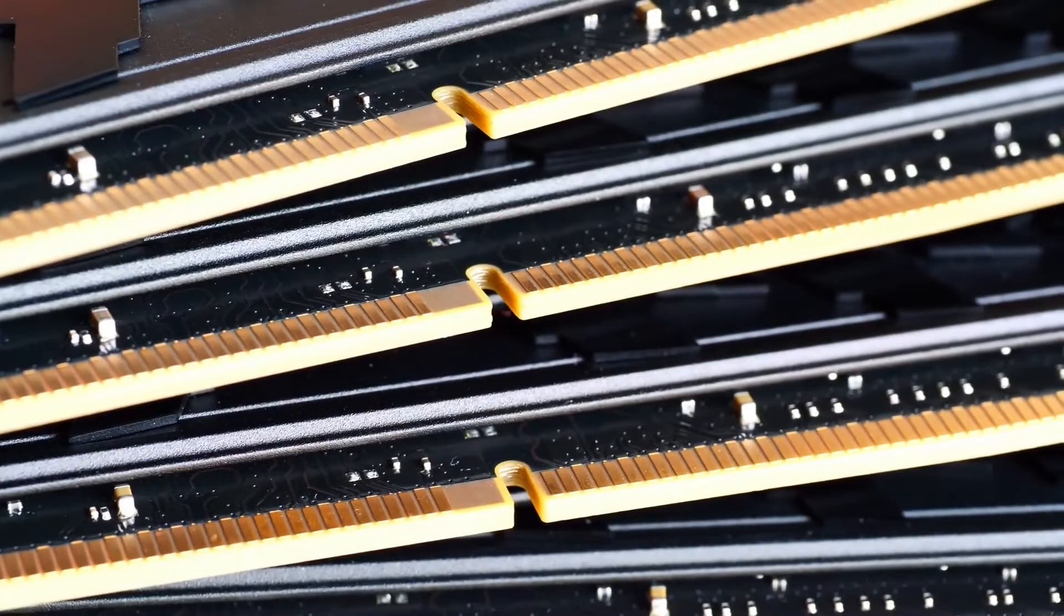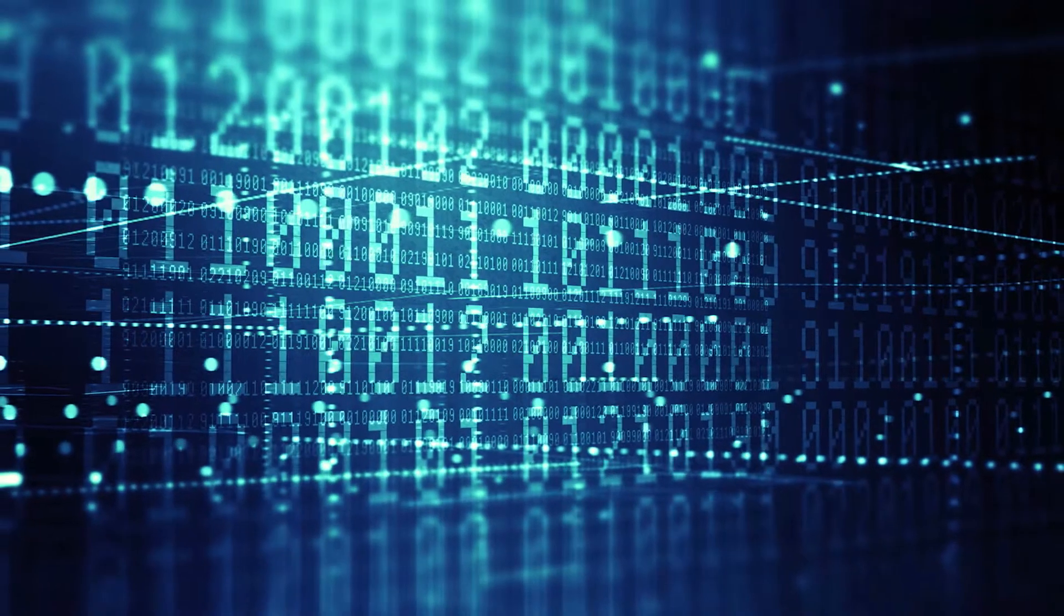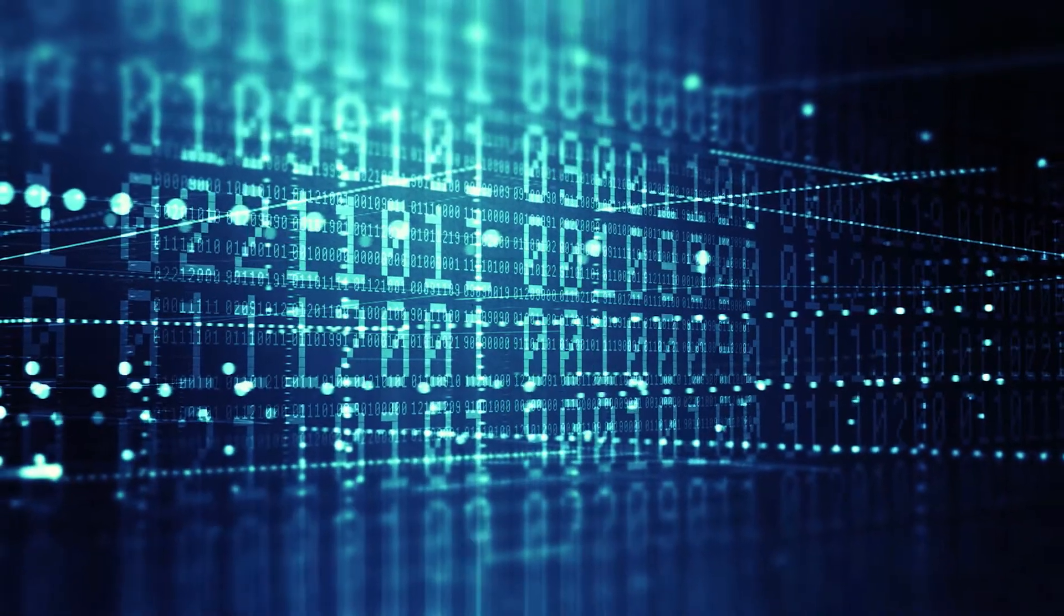Memristor is a data storage device which memorizes the state of the resistance, and it is a combination of memory and resistor. It means that by changing the resistance state of the device we can write, read and store the data, and it can retain data without access to external power.